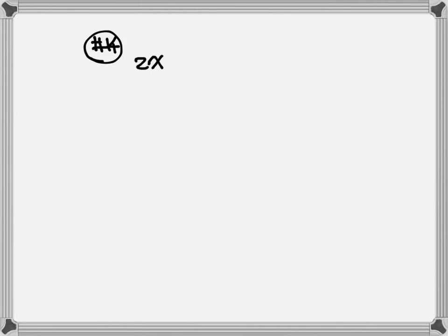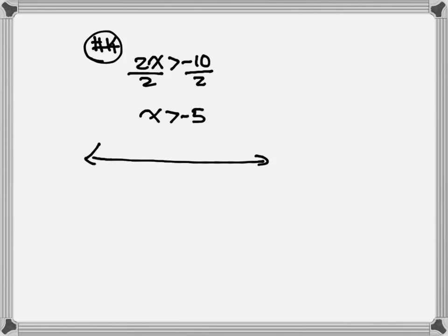Let's look at number 14. We have 2x is greater than negative 10. Let's get rid of the 2 — we want x by itself — so divide everything by 2. So x is greater than negative 5. Let's graph: write down 0, negative 5 is on the left-hand side. No equal sign, so use parenthesis on the negative 5. Point is pointing to the right, so draw the arrow to the right. Last step, interval notation: parenthesis on negative 5, going to the right is positive infinity, close parenthesis.